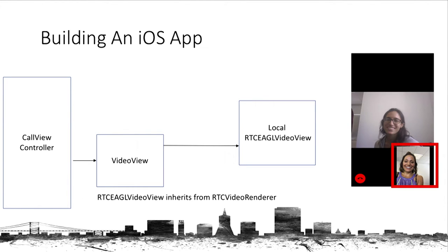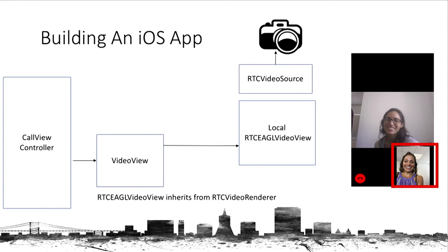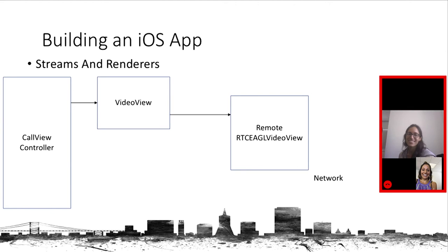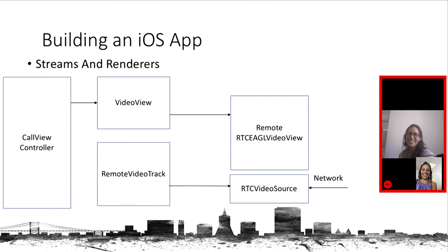For the camera, WebRTC will open the camera and create an RTC video source for it. Then it will create a local video track and give us a callback so we can store it and point it to our local video view for rendering, so the camera image shows on our local view. For the remote, it's similar — an RTC video source will be created for the remote video, a remote video track will also be created by WebRTC, we will get the callback from the ARD App Client and attach it to our view to show the remote side video.